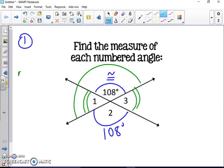So we know that the measure of angle 1 plus 108° equals 180°. If we subtract 108 from 180, we have the measure of angle 1 is equal to 72°. So that means this angle is 72°. Angle 3 is congruent because it's vertical, so that is also 72°.